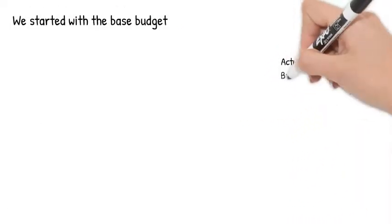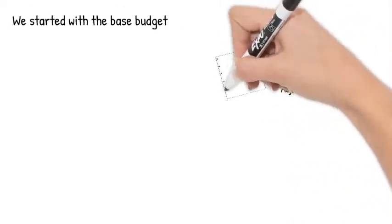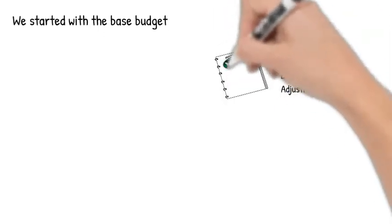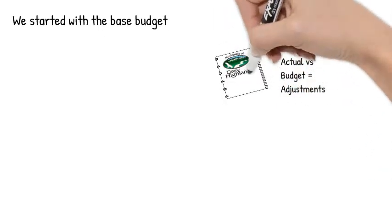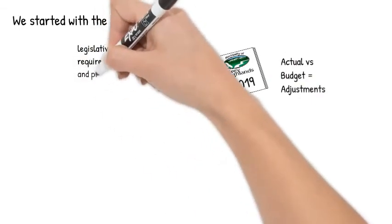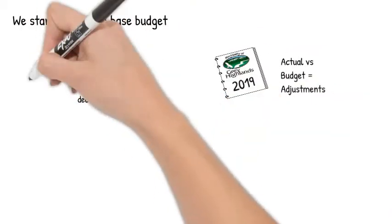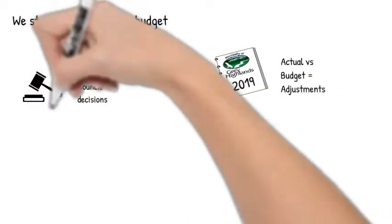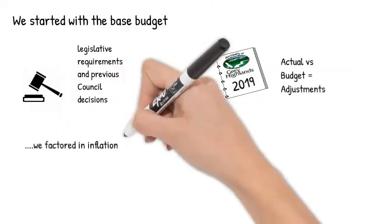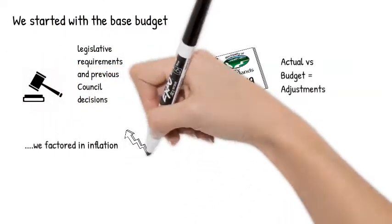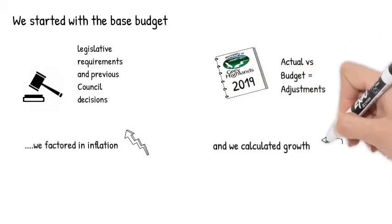We started with the base budget, which is the 2019 approved capital and operating budget. We reviewed the budget numbers against our actual numbers and provided for adjustments. Legislative requirements and previous Council decisions were added. We factored in inflation and calculated our growth.